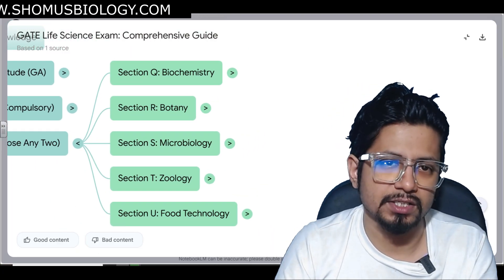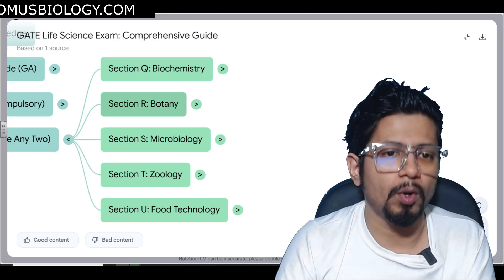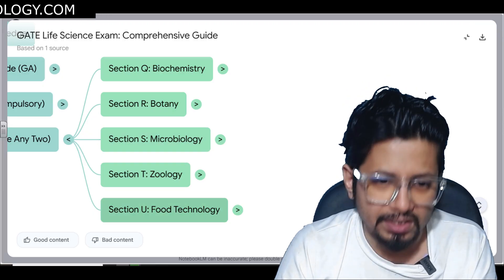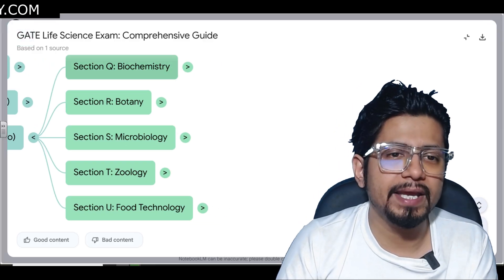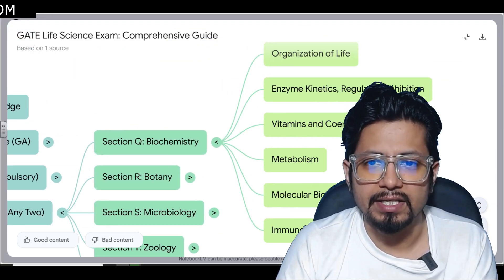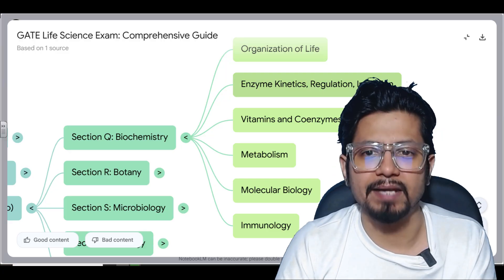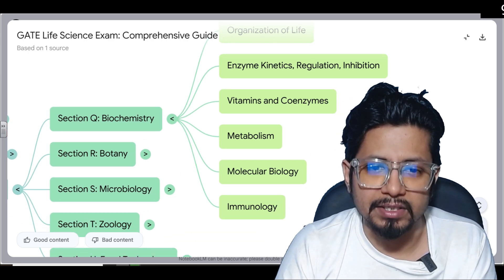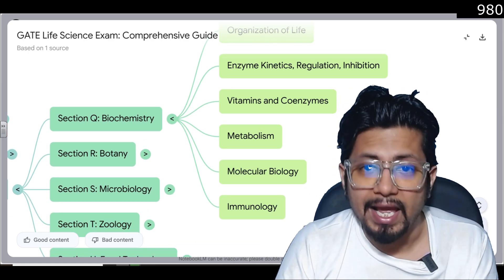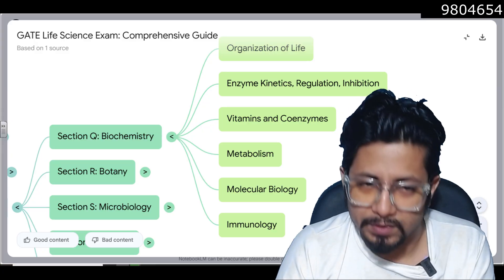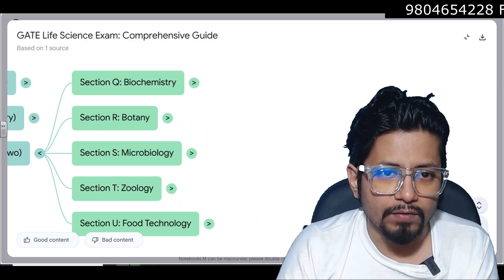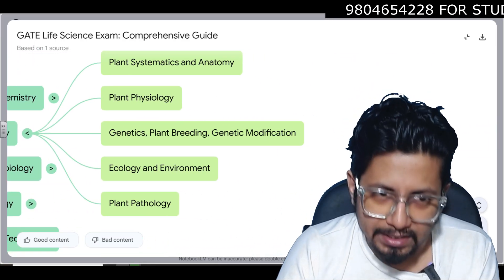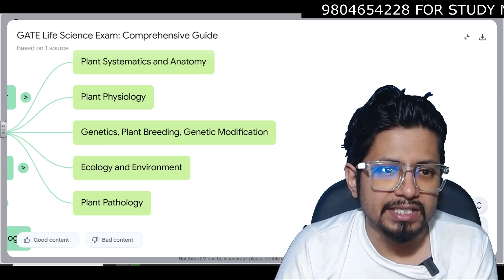If you get inside of all these sections, Biochemistry is called as Section Q, Botany as Section R, Microbiology as Section S, Zoology as Section T, Food Technology as Section U. If you get inside the Biochemistry section, here you have organization of life, enzyme kinetics regulation and inhibition, vitamins and coenzymes, metabolism, molecular biology and immunology. All these topics need to be studied for Biochemistry section. For Botany section you need to study plant systematics and anatomy, plant physiology, genetics, plant breeding, gene modification, ecology and environmental biology. Plant pathology is very important for last few years.